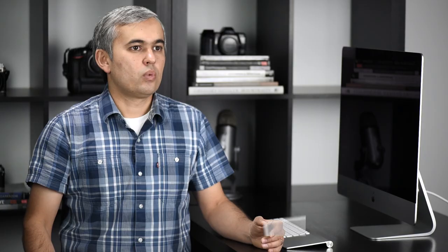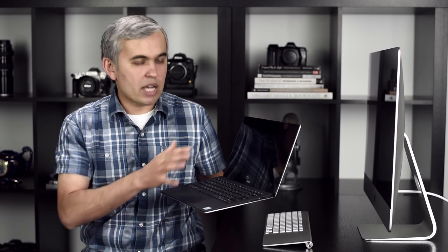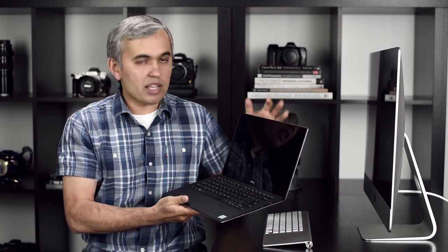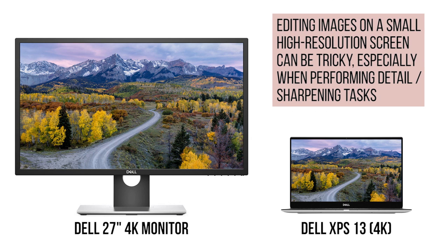It's important to note that resolution doesn't directly correlate with monitor size. This 27-inch iMac has a 5K screen, but there are 27-inch monitors with much less resolution. Conversely, some smaller laptop screens can have just as much resolution — this Dell XPS 13 has a 13-inch screen with 4K resolution. That's more than twice the size difference compared to the 5K iMac, yet the pixels are so small that it impacted my editing — when sharpening images I didn't notice I was over-sharpening until I viewed them on a lower-resolution screen.